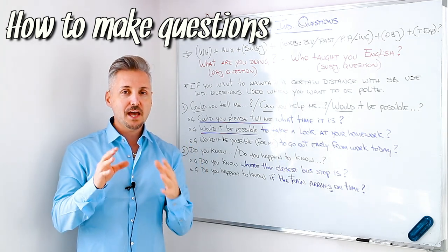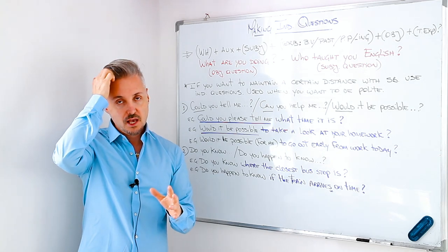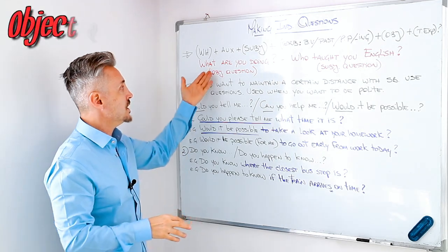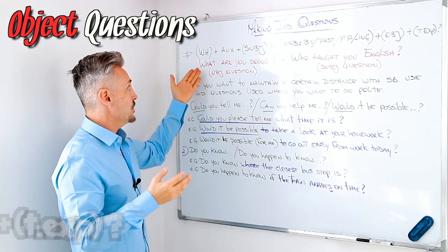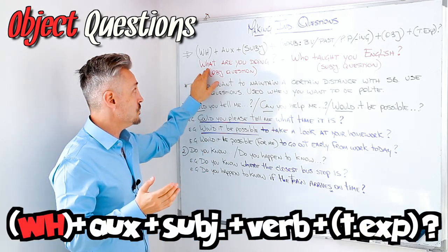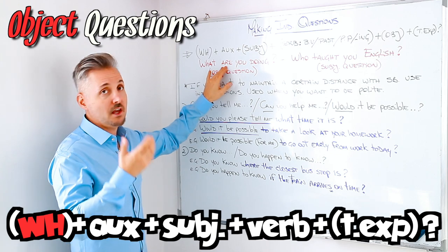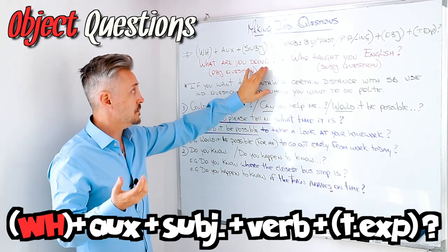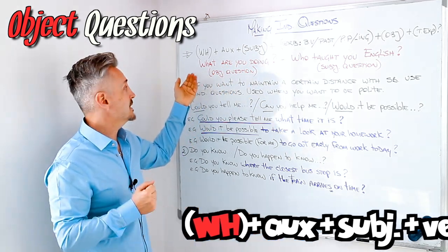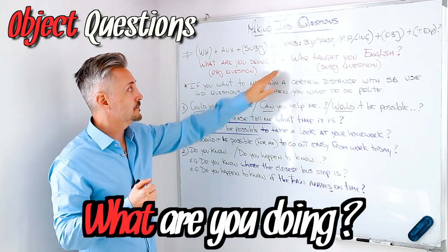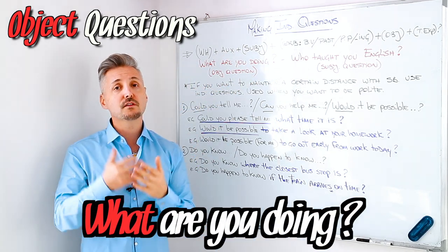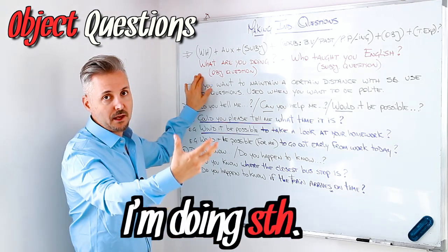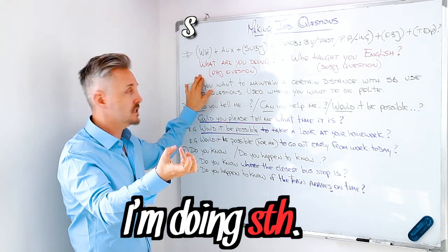So we have two types of questions: object questions and subject questions. The object questions follow this rule: WH question word, then the auxiliary, then the subject, and then the verb. Like in this example — 'What are you doing?' I'm asking for the object; I'm doing something, so something is the object.